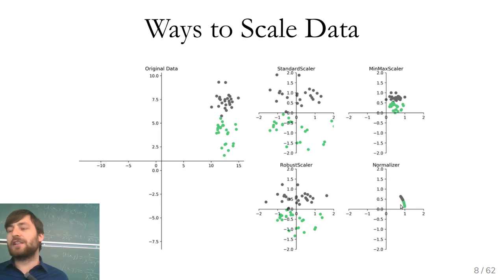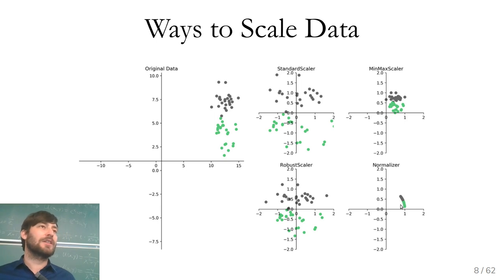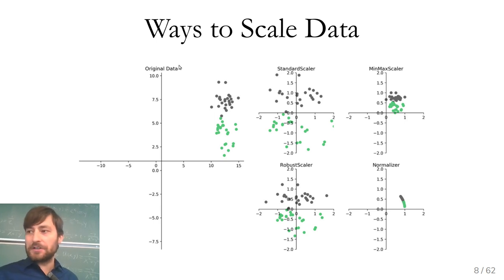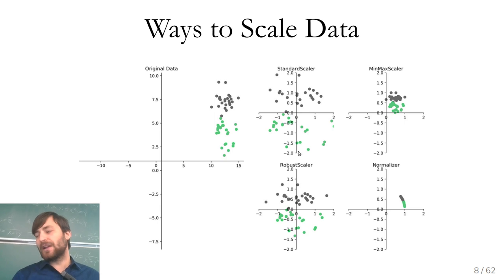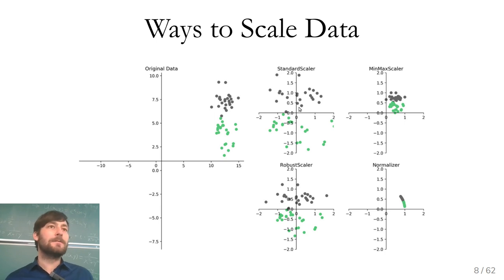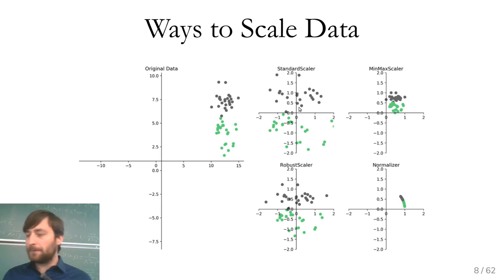There are quite a few ways to scale your data. The most commonly used one is the StandardScaler in scikit-learn, also called z-score, which produces zero-mean unit-variance. Here in a two-dimensional illustration, the standard scalar subtracts the mean and divides by the standard deviation along both axes. This makes sense if you have something like Gaussian data, and it's what I would do by default for most datasets.